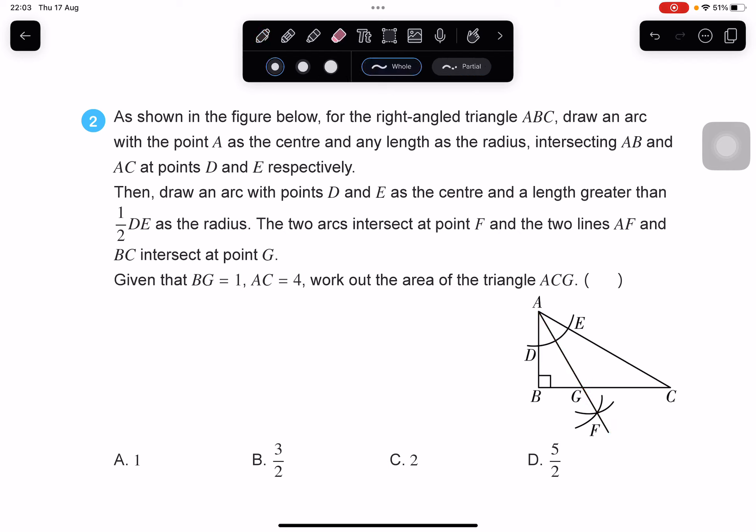So that's the angle bisector, and that's intersecting this BZ at G. Now it's telling us that BG is 1, AC is 4, and we want to find the area of the triangle ACG.